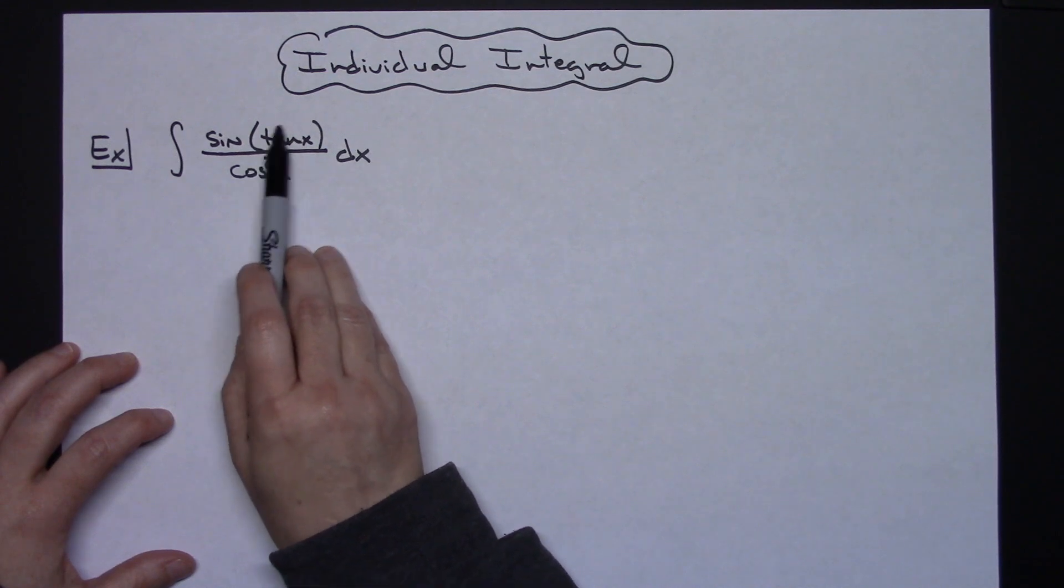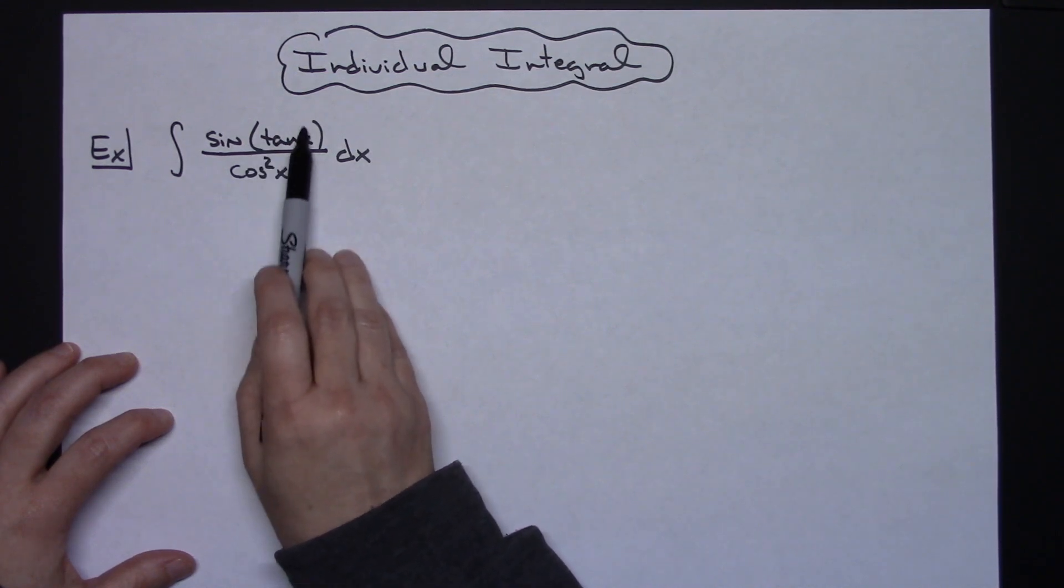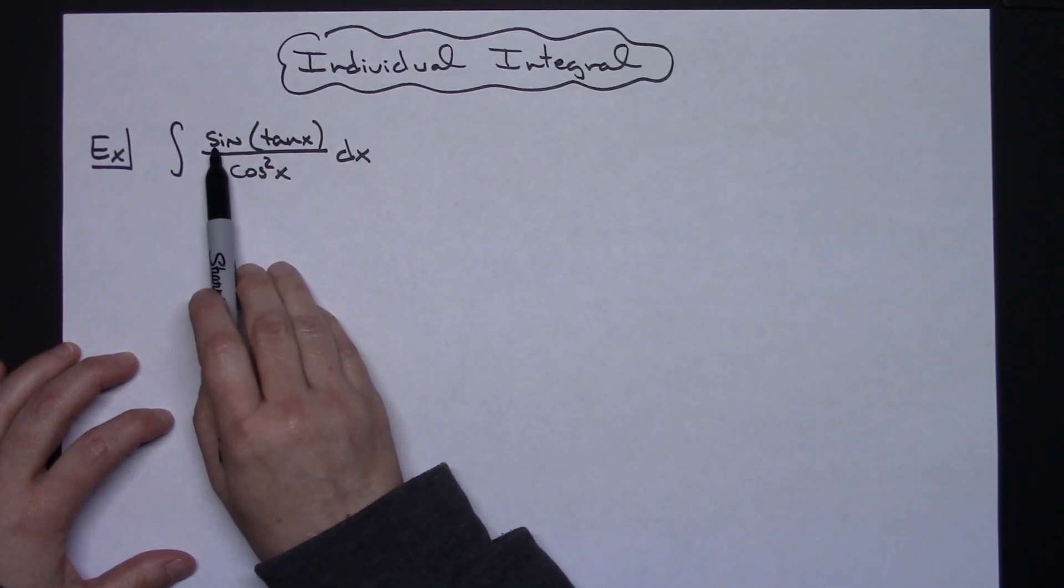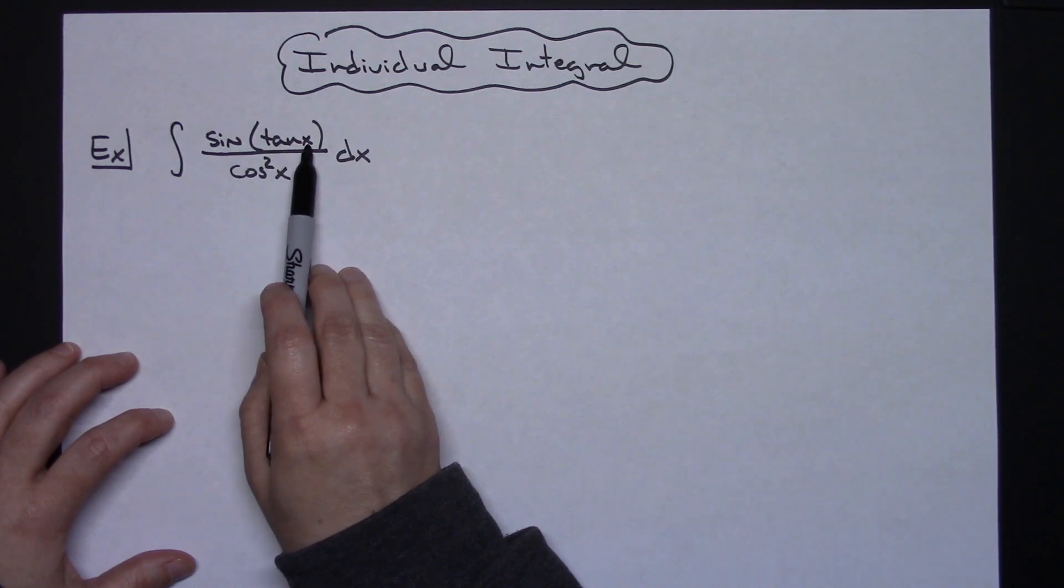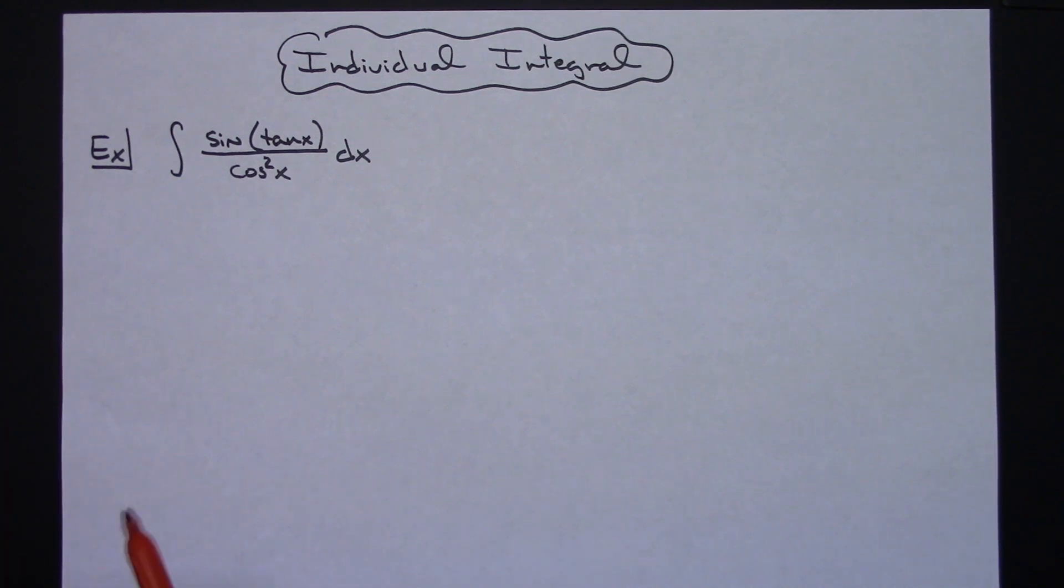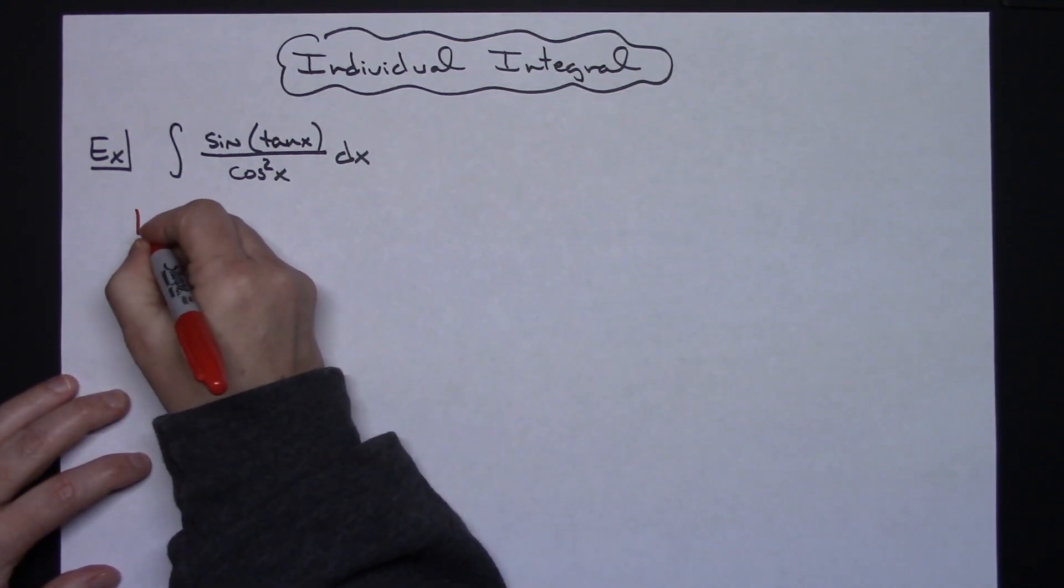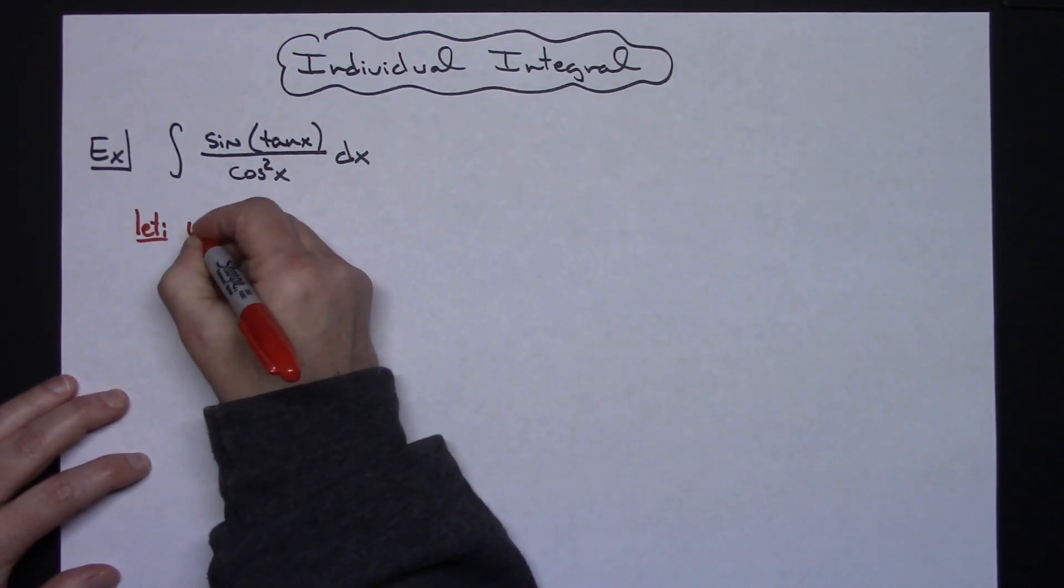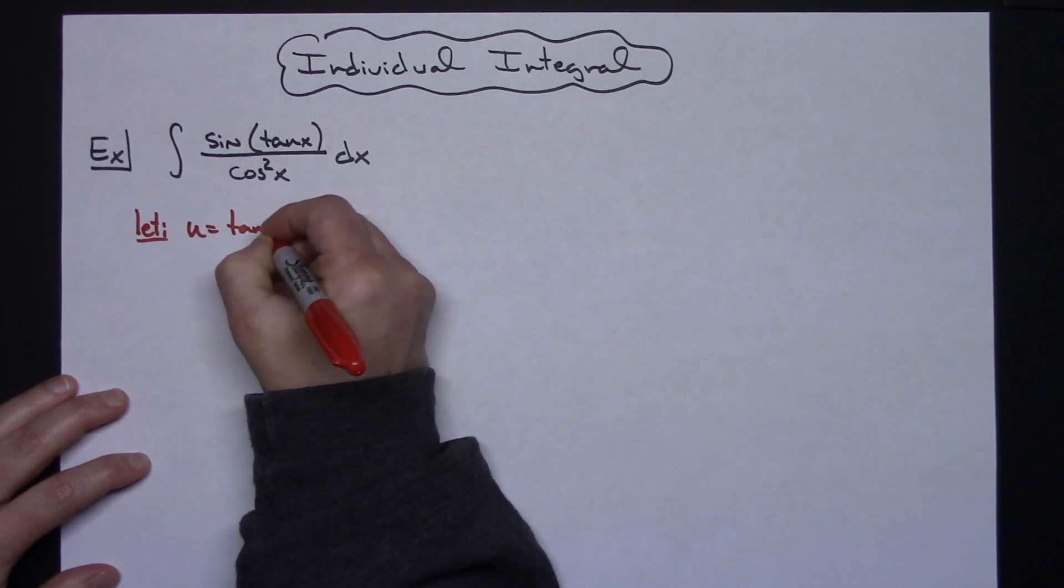The way I'm going to choose my u is I'm going to take a look at the inside part of this numerator. I've got the sine of tangent x. That tangent x is on the inside, so that's what I'm going to let my u be. So I'm going to let u equal tangent x.